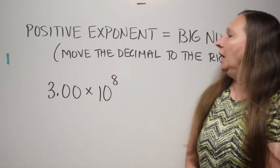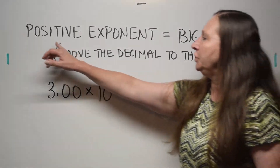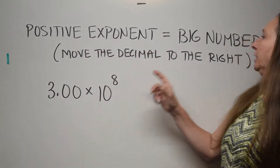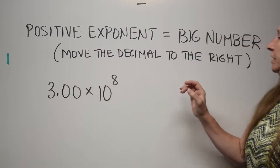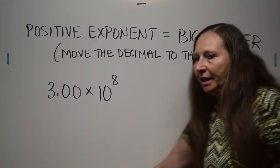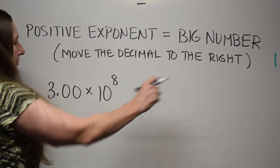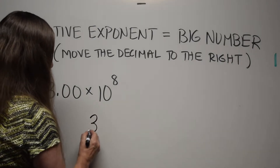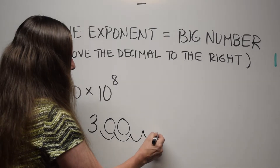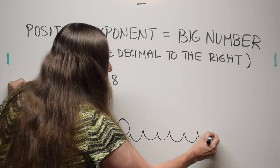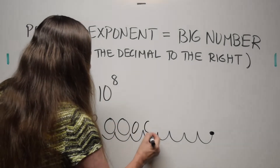So how do we convert a number in scientific notation back to a decimal number? Well, first of all, if it's a positive exponent, that means it was a big decimal number, so you're going to have to move the decimal point to the right to make that number bigger. Let's do that now. We're going to jump eight places to the right. So 3.00 — here we go: one, two, three, four, five, six, seven, eight jumps. Now the decimal is over there.